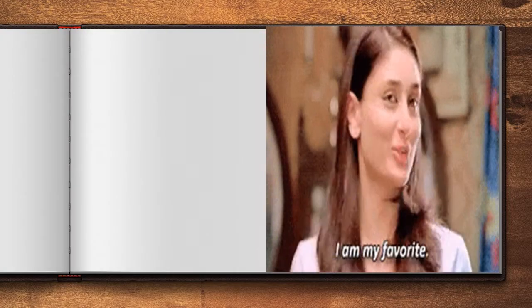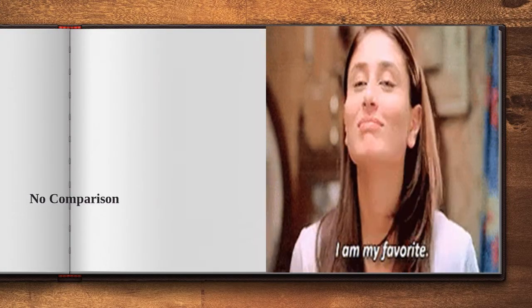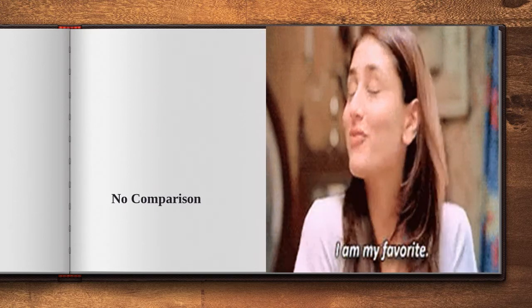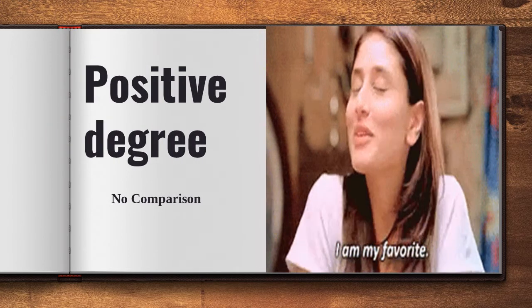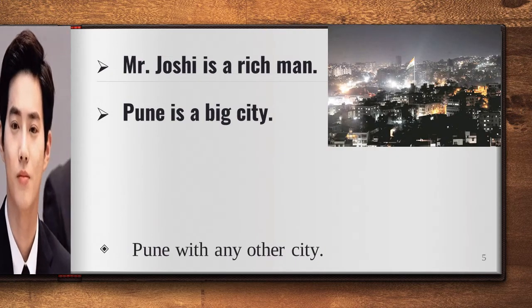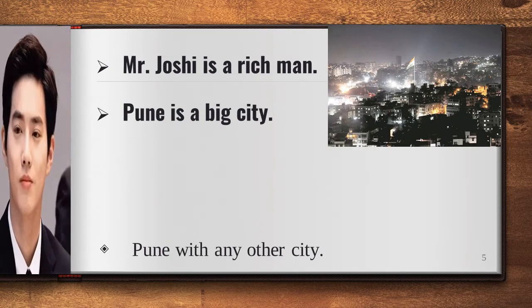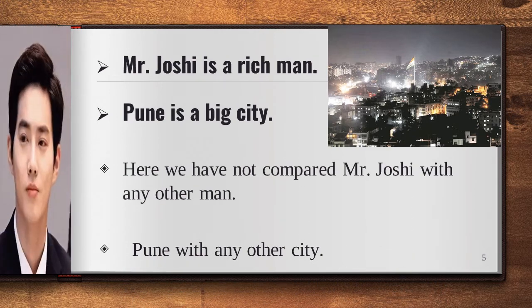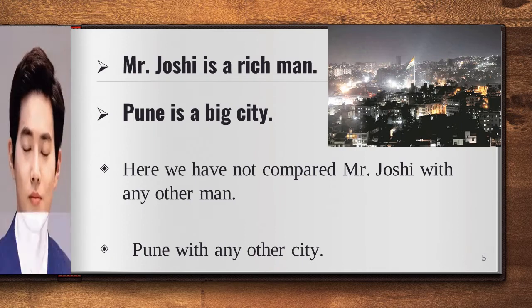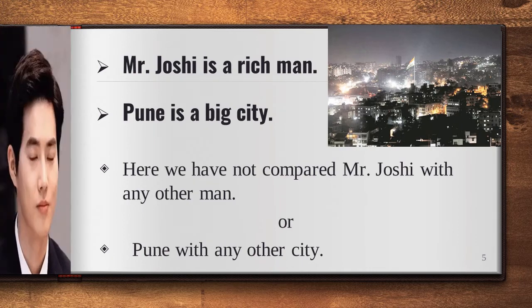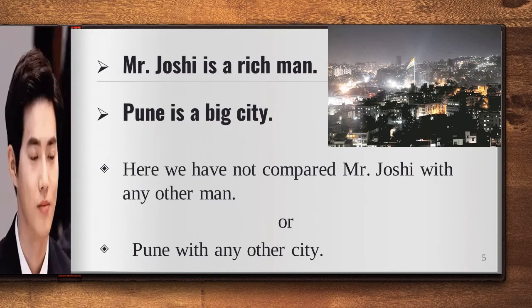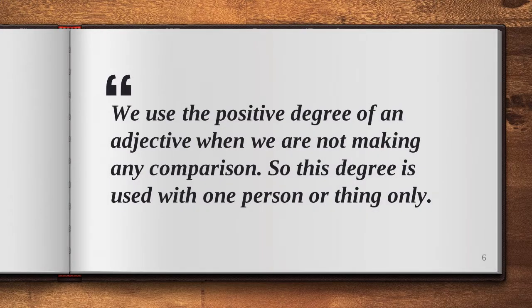Let's get started. An adjective without any comparison is said to be in the positive degree. For example, Mr. Joshi is a rich man — here, we have not compared Mr. Joshi with anyone. Another example: Pune is a big city. Again, we are not comparing Pune with any other city. So, we use the positive degree when we are not making any comparison; this degree is used with one person or thing only.